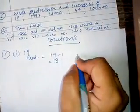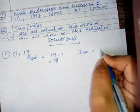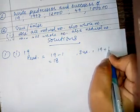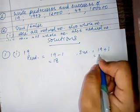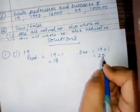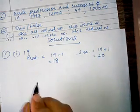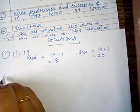And successor of 19 is: we add 1 to it, so 19 plus 1 is 20. This is how we find out successor and predecessor.